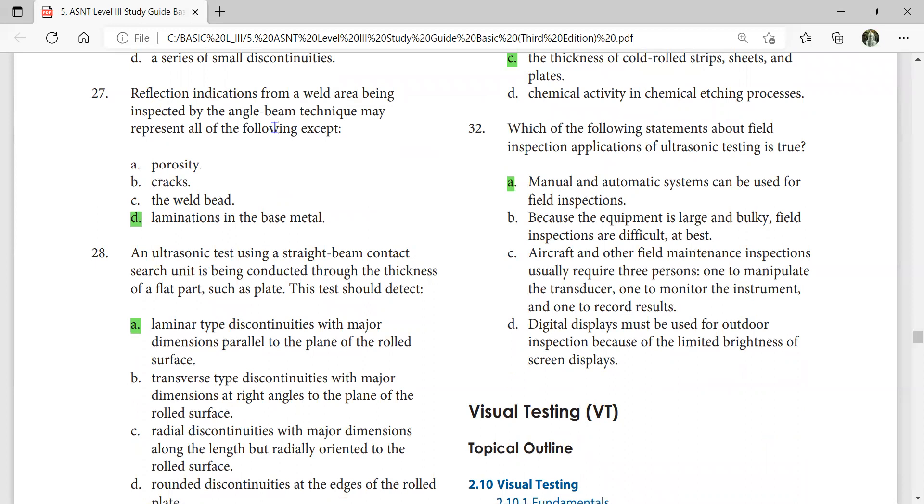Reflection indications from a weld area being inspected by angle beam technique may represent all of the following except laminations in the base metal. It cannot catch laminations in the base metal.